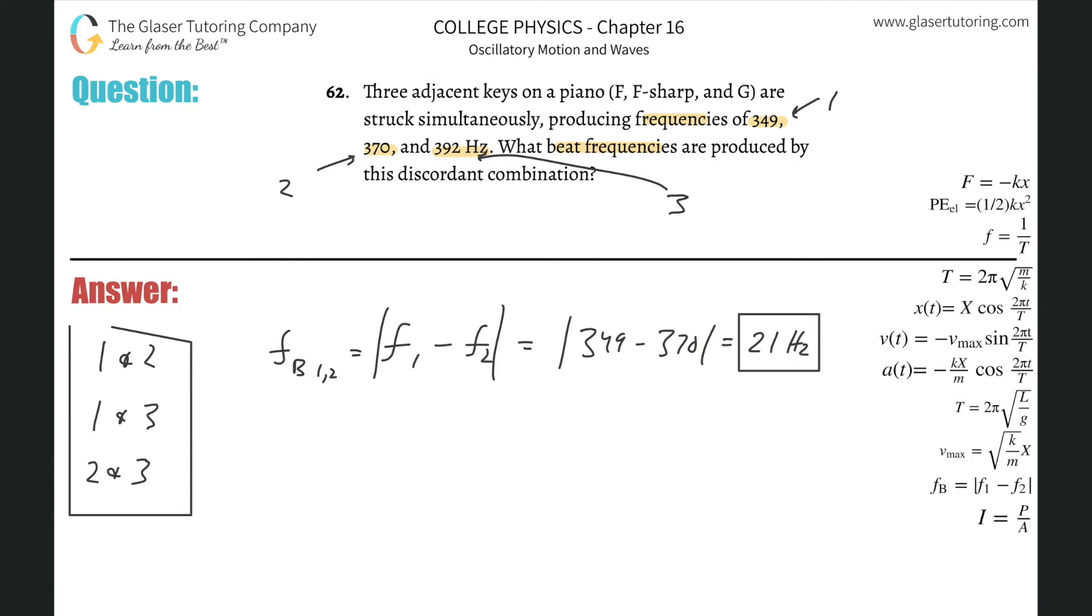Same thing with the other two. So this is the beat frequency now between one and three. This is going to be F1 minus F3. And this is then going to be 349 minus 392. So that looks like it's going to be about 43 hertz.